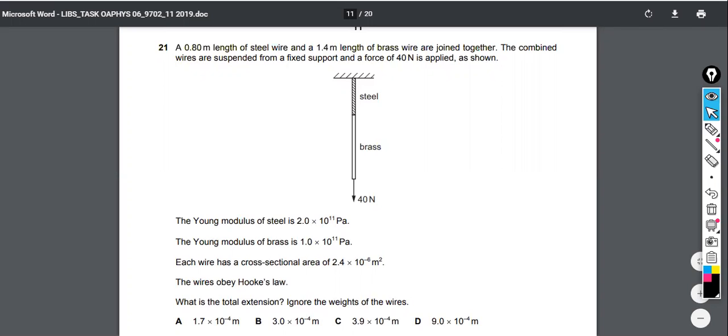Each wire has a cross-sectional area of 2.4 by 10 to the negative 6 square meters. So a square meter would be like if I took a meter ruler and another meter ruler and I built a square out of it. That's a big area. These are tiny wires, and so it's a millionth, right? 2.4 millionth square meter. So really, really tiny areas you might expect for something like a wire.